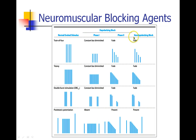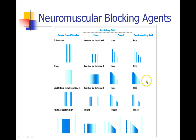Phase two block and phase one block are unique to depolarizing agents like succinylcholine. The block of a non-depolarizer is not called phase two block — that would be incorrect — even though it looks identical on the peripheral nerve twitch monitor.